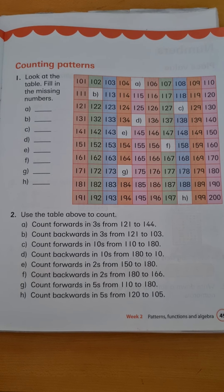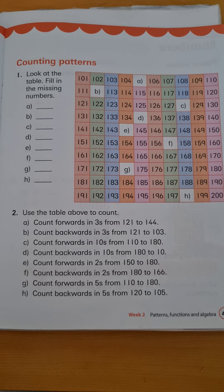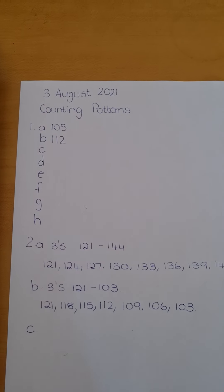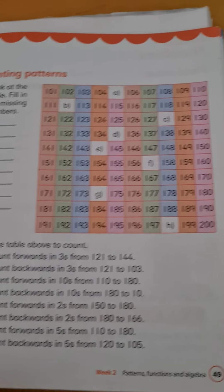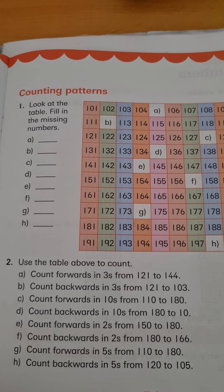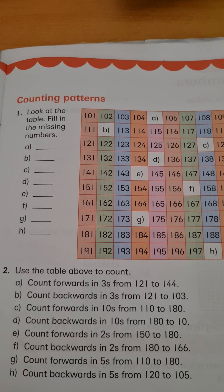So the first part on page 49, you're going to write your date in your exercise book, 3 August, counting patterns. The activity says look at the table and fill in the missing numbers.